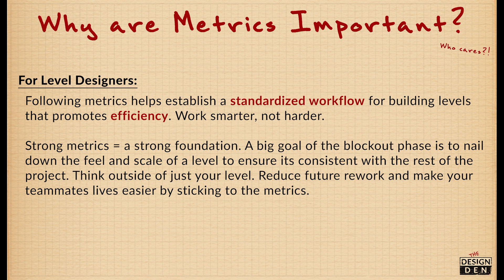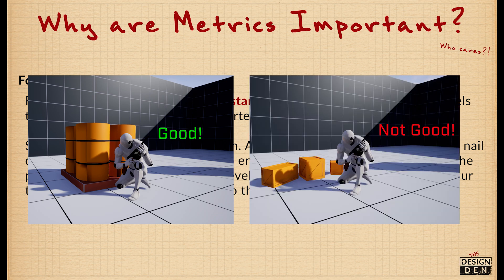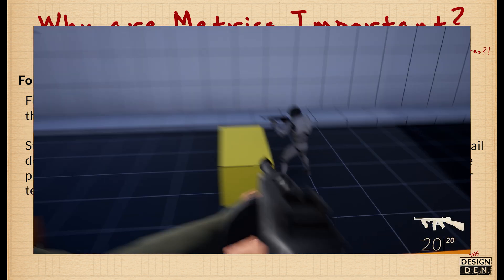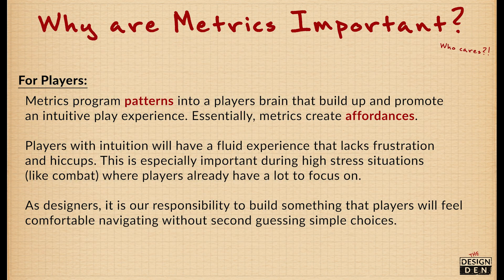But what about the player? What do metrics do for them? You want players to understand, for example, what is cover and what isn't cover — what walls they can climb versus what walls they can't climb. What you want to happen is for these patterns to unknowingly or knowingly build up in a player's mind so they never second guess if they can take cover here or if this wall is the right height or not. These patterns turn into intuition. You want players to have intuition because the experience will be fluid and lacking any weird frustration or hiccups from them always second guessing simple choices.